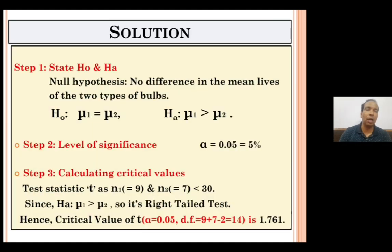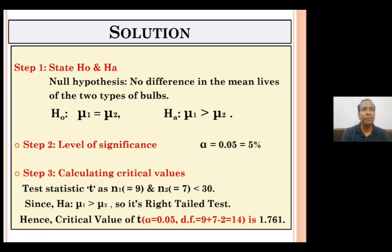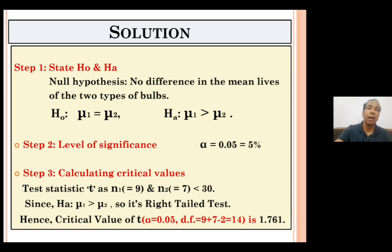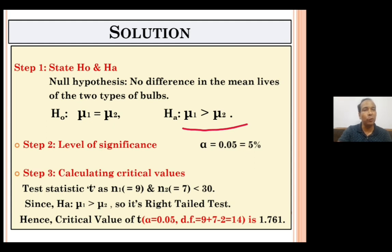Now let's work out this problem using the five steps of hypothesis testing. Step one: state the null and alternative hypothesis. Null hypothesis: there is no difference between the mean life of the two types of bulbs, that is μ₁ = μ₂. Alternative hypothesis: the CEO assumes type A bulb's mean life is greater than type B, so μ₁ > μ₂. The level of significance is given as 5%.